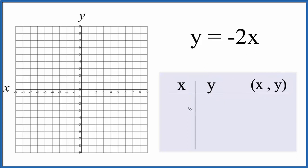So let's start by putting in 0 for x. That's a good place to start. Negative 2 times 0 that gives us 0. How about 1? Negative 2 times 1. That's just negative 2.